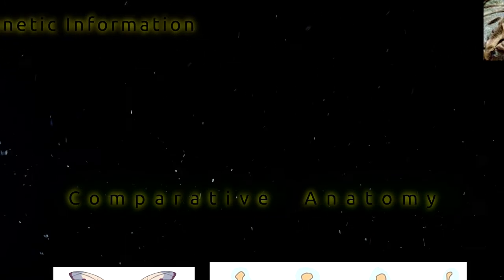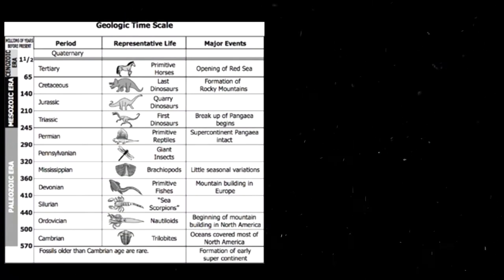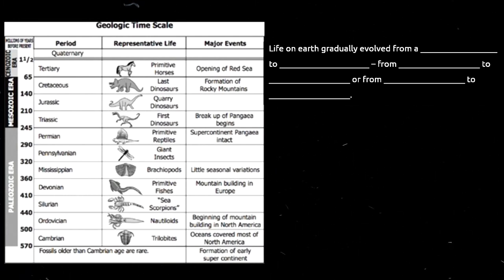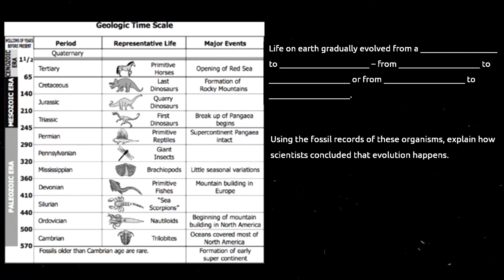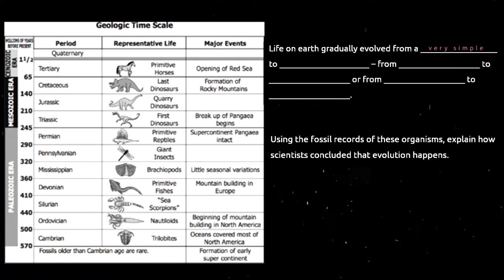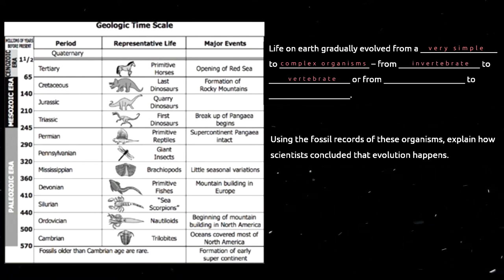Now displayed on the screen is what we call the geologic time scale. Complete the statement below explaining how organisms have changed over time based on the geologic time scale. Using the fossil records of these organisms, explain how scientists were able to conclude that evolution happens. The answer is: life on Earth gradually evolved from very simple to complex organisms, from invertebrate to vertebrate, or from unicellular to multicellular.